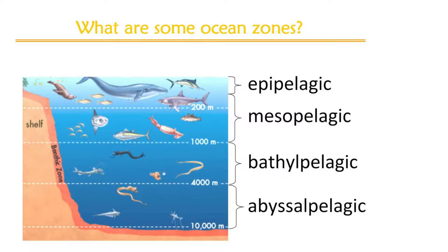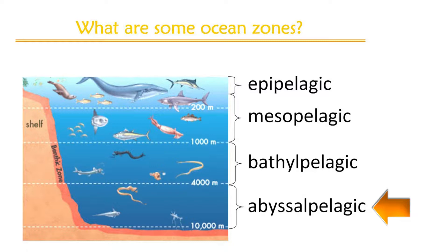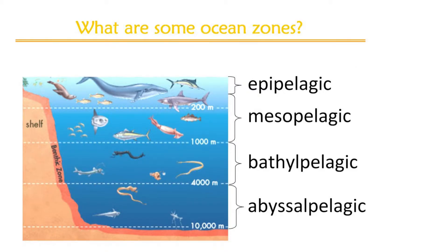Let's name the zones, the zones, the zones. What are some ocean zones? Epipelagic, mesopelagic, bathypelagic, abyssalpelagic. These are some ocean zones. Let's name the zones, the zones, the zones. What are some ocean zones? Epipelagic, mesopelagic, bathypelagic, abyssalpelagic. These are some ocean zones.